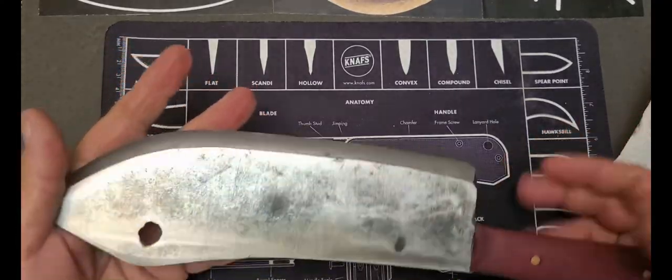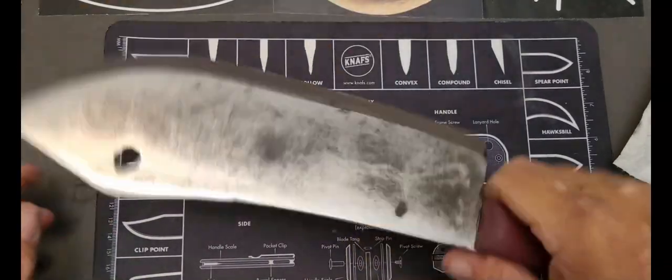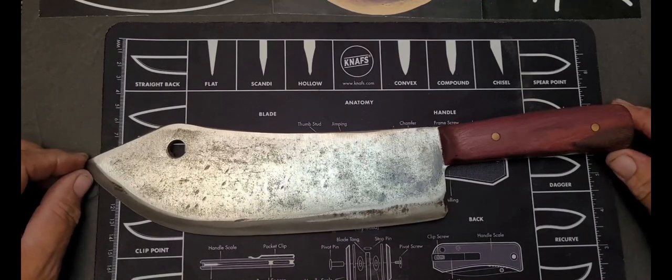I believe that would chop through just about anything I put in front of it. It's really heavy. Again, not something I'm going to tote around all day long. But there you go guys. The saw blade chopper from the workshop. Rust turned to patina.